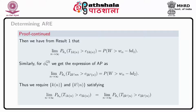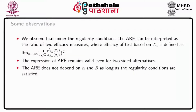We get another remark. From the expression of ARE, we observe that under the regularity conditions, ARE can be interpreted as the ratio of two efficacy measures, where the efficacy of the test based on T_n is defined as the limit as n tends to infinity of (1/root n) times mu prime(T_n, theta naught) divided by sigma(T_n, theta naught), whole square.